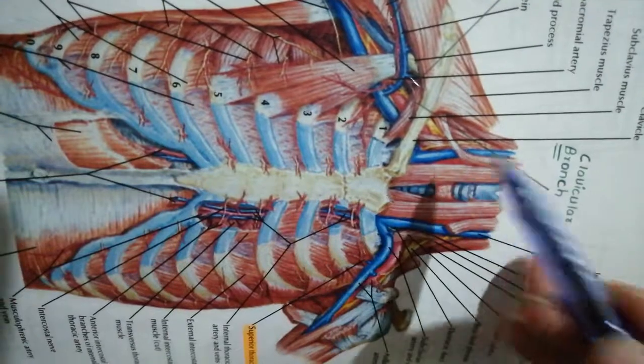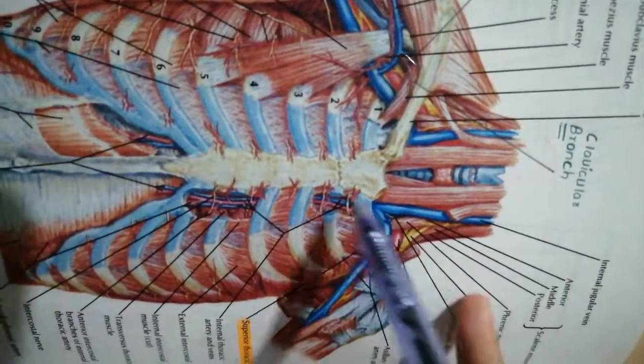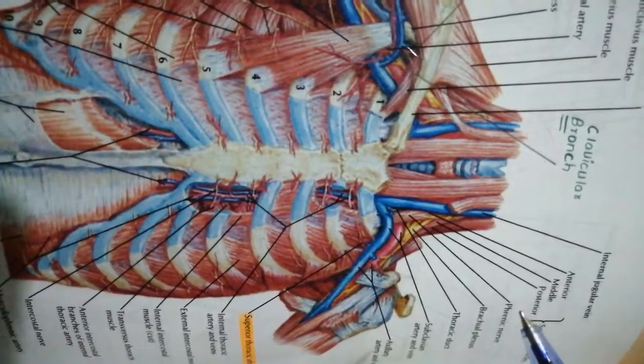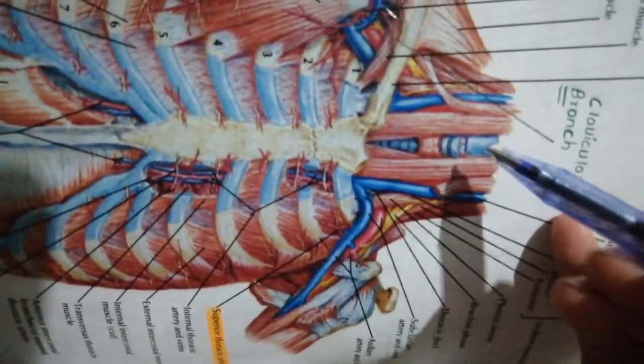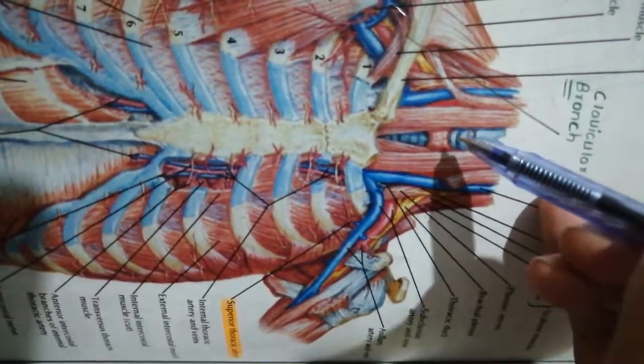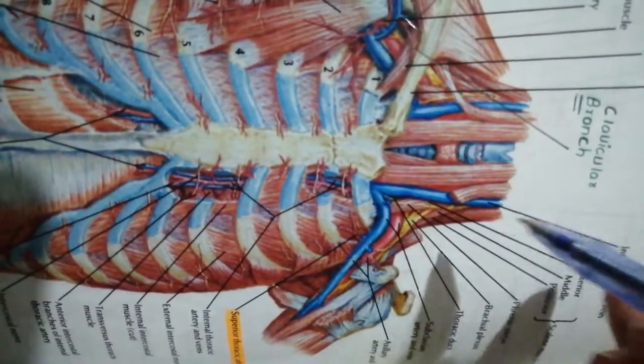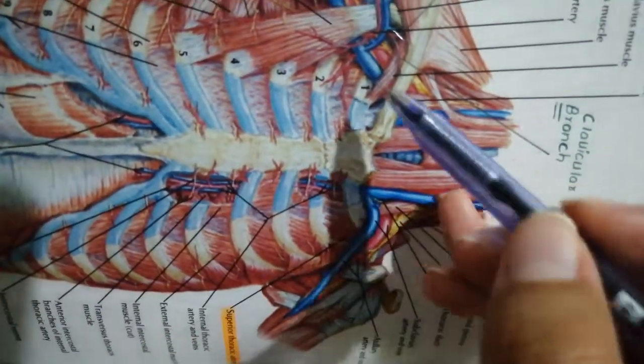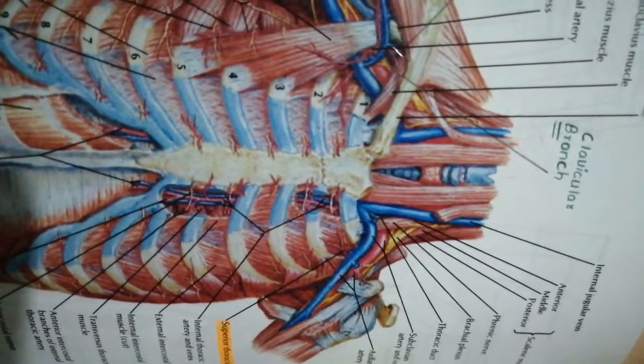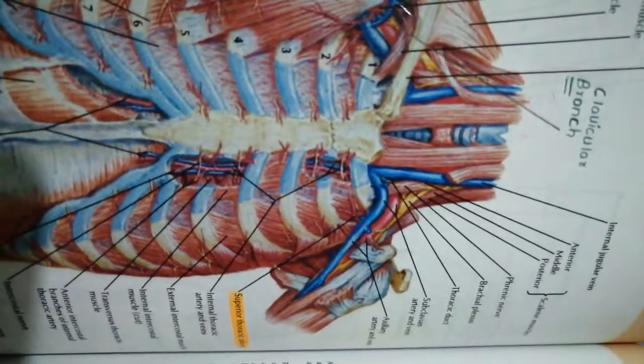If you consider the structures passing through the inlet, let's start with the major viscera. Over here we can see the trachea. Right beneath the trachea we have the esophagus. The trachea and esophagus are structures that pass through the inlet. Also, the apices of the lung along with the cervical pleura project into the inlet.